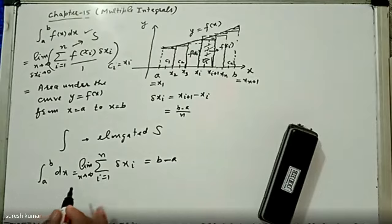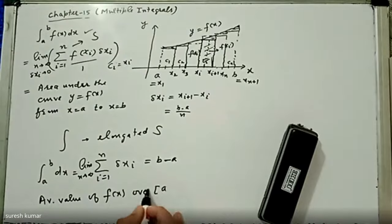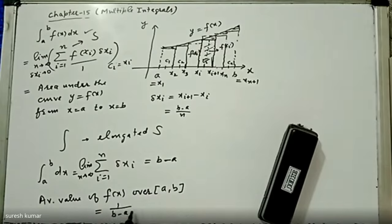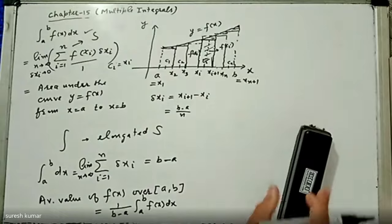The average value of f(x) over the closed interval [a, b] is given by 1/(b − a) times the integral from a to b of f(x) dx. Remember: the average value is defined as 1 over the length of the interval times the integral of f(x) over that interval. In analogy to this, we can define the double integral.